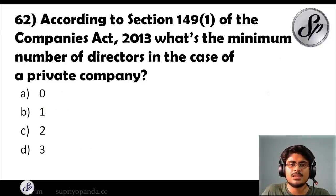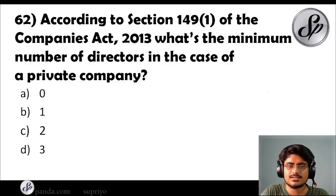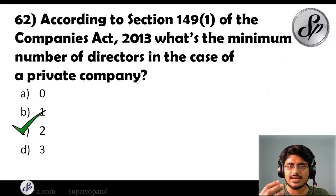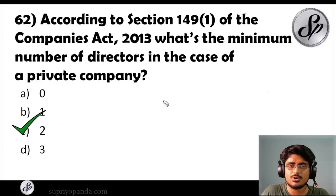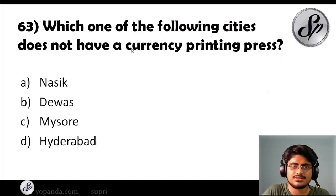Question sixty-two: according to Section 149.1 of the Companies Act 2013, what is the minimum number of directors in the case of a private company? The answer is two. Minimum two directors must be there in a private company. Remember the specific section of the Companies Act that mentions this.